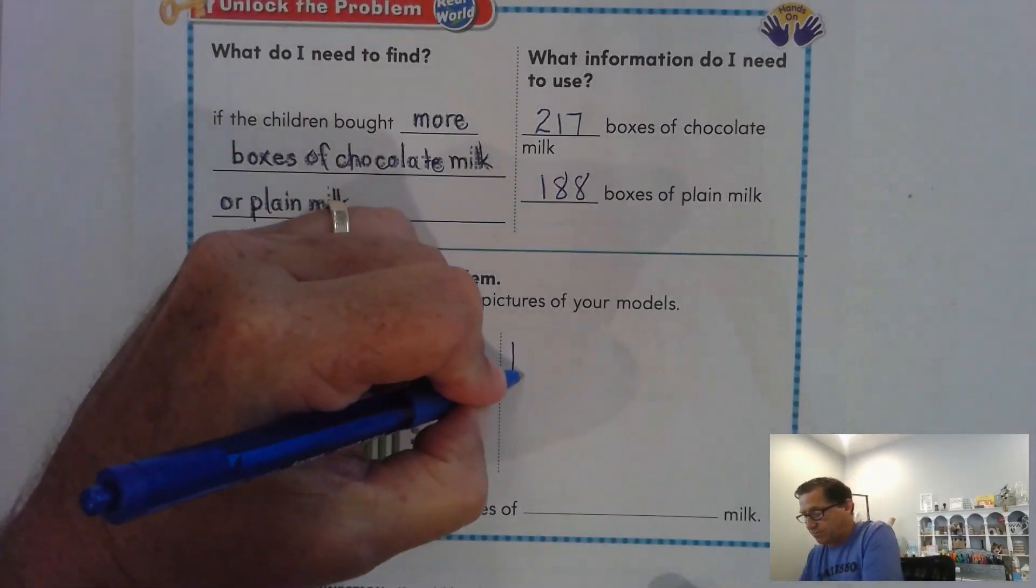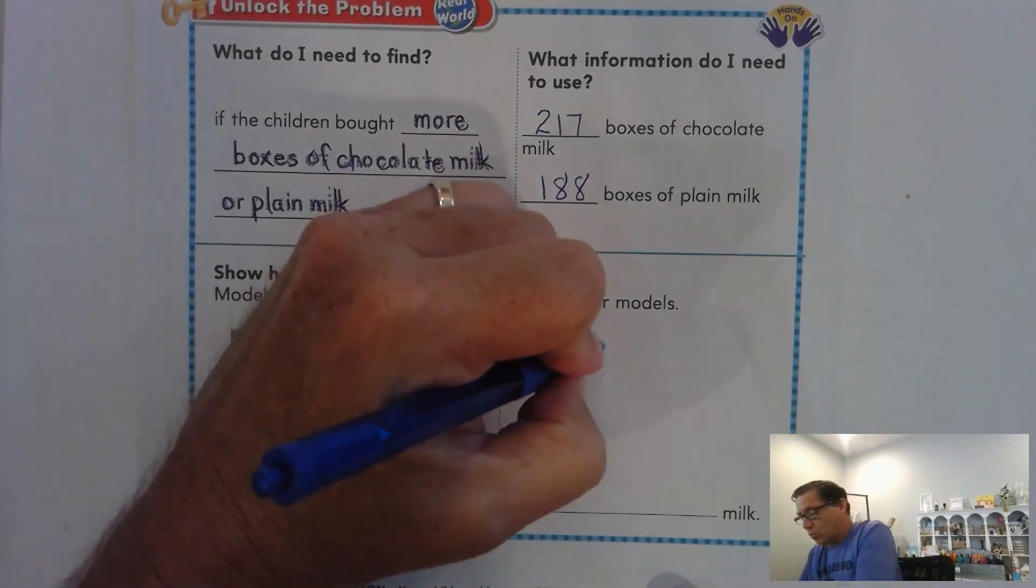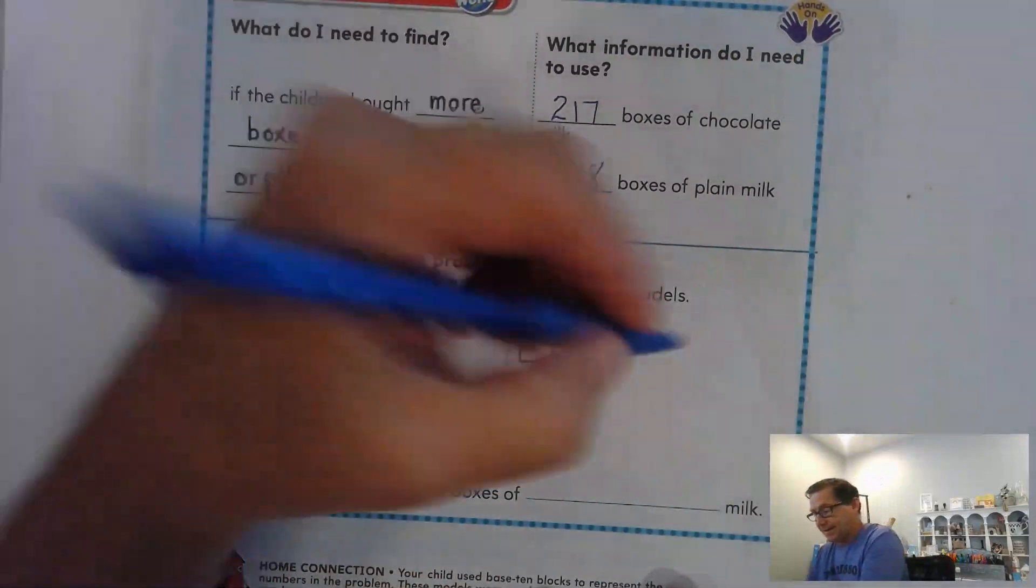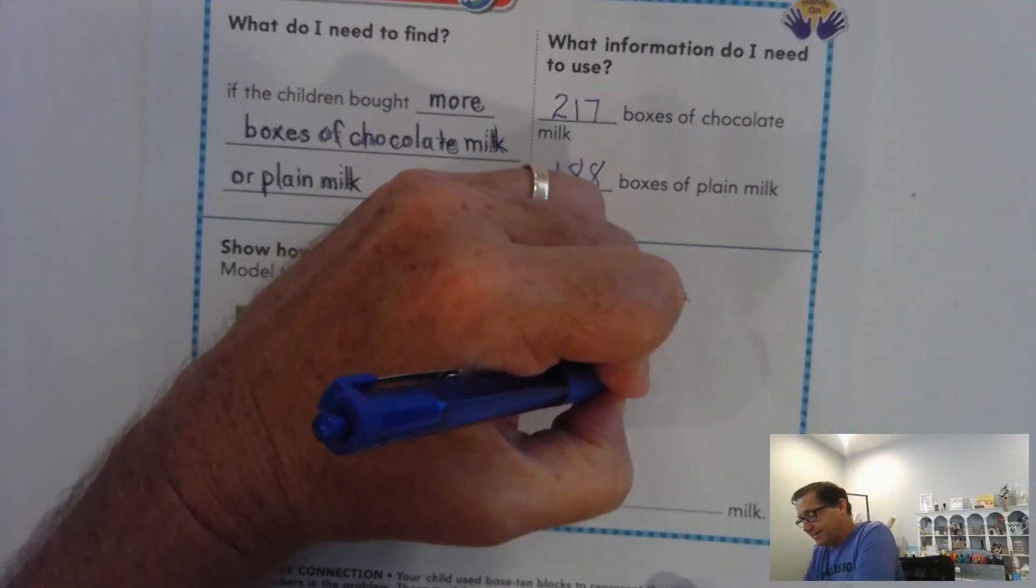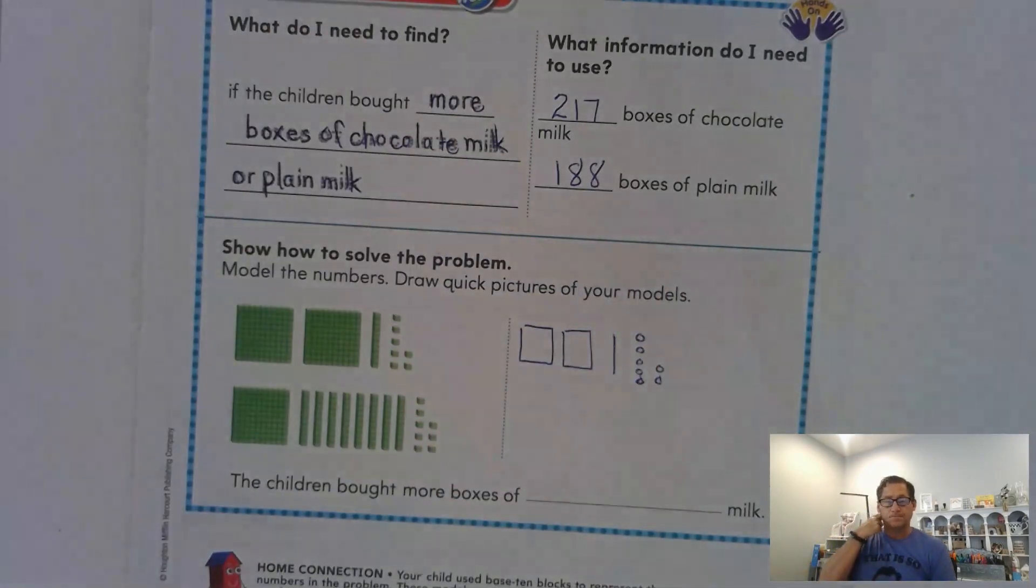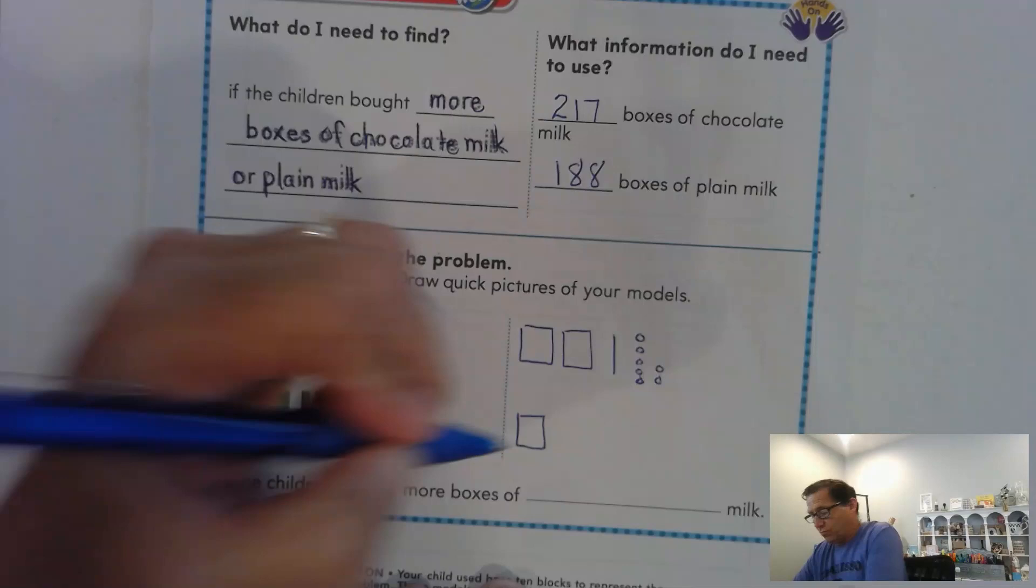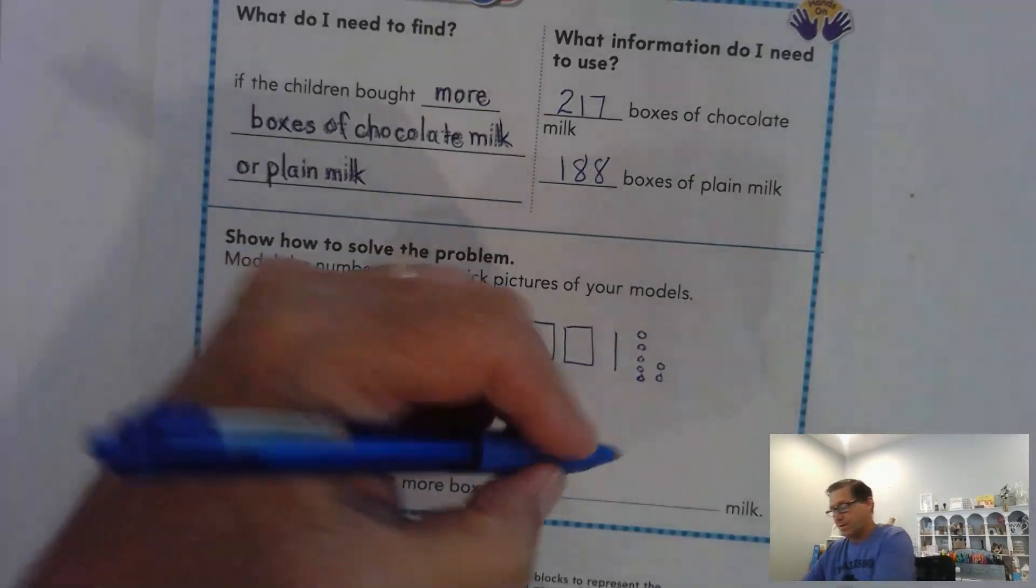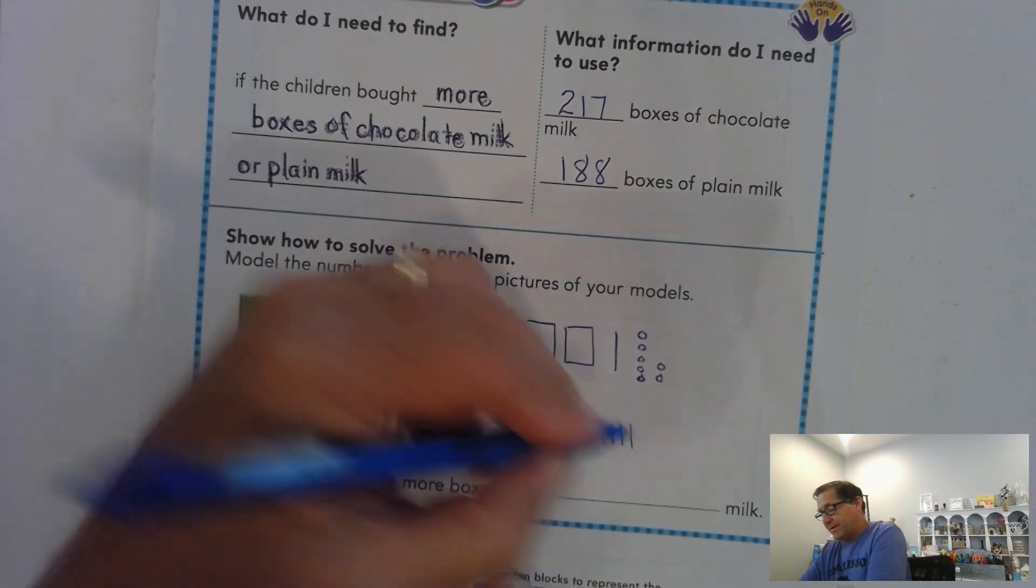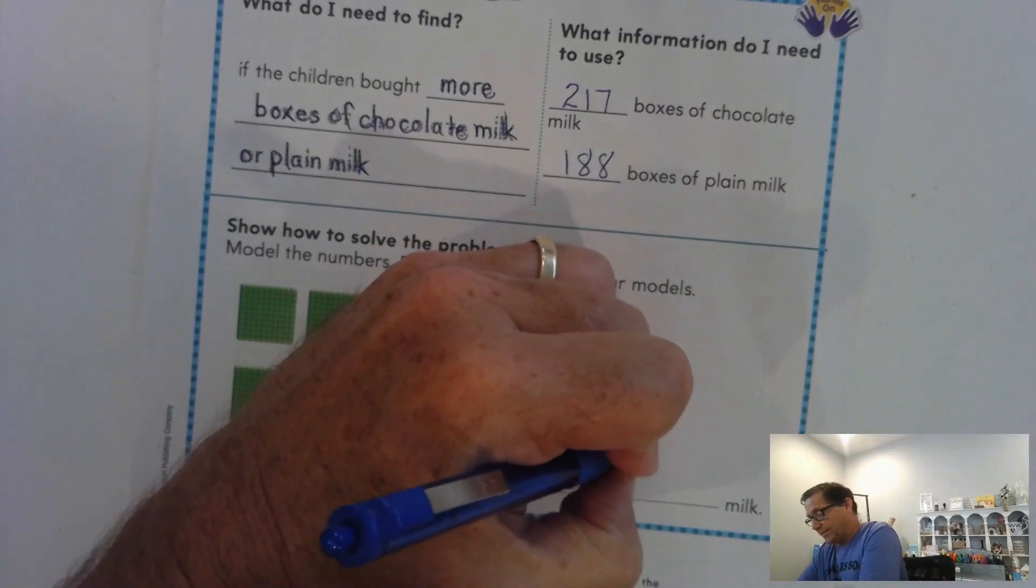200 would be represented with two squares. 10 would be a straight line. And 7 ones would be 7 circles. And then for 188, we would have 100 block, 1, 2, 3, 4, 5, 6, 7, 8, 10 blocks. And we'd have 8 ones.